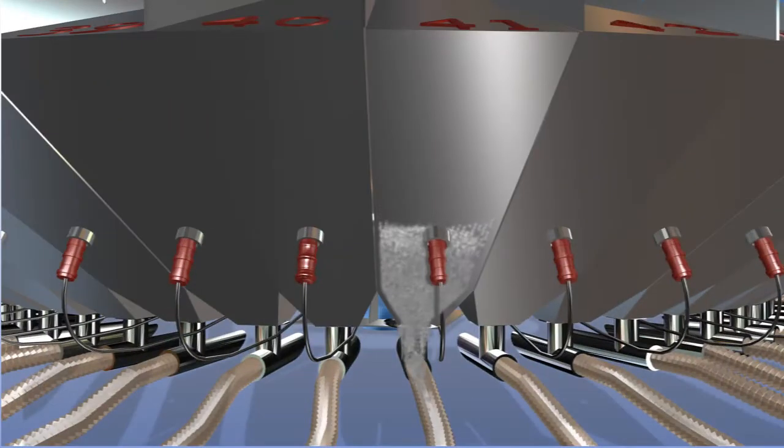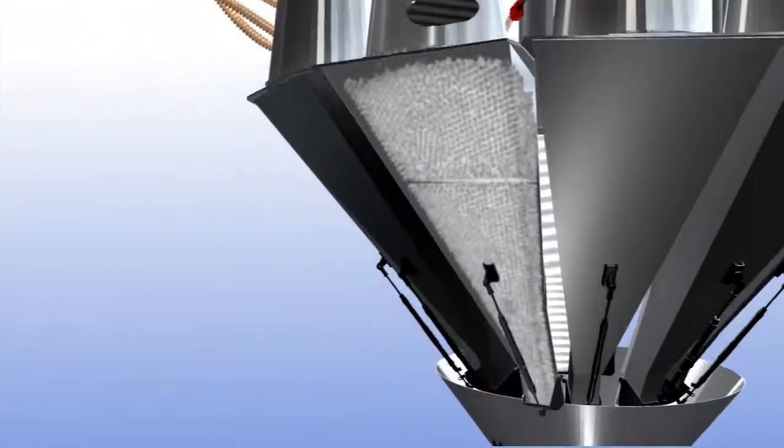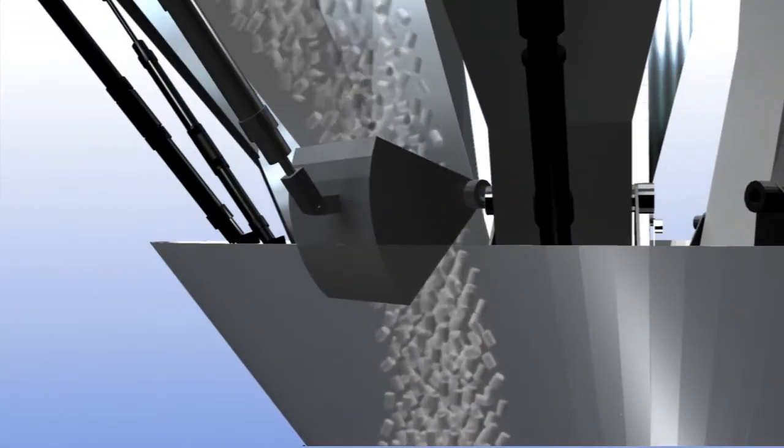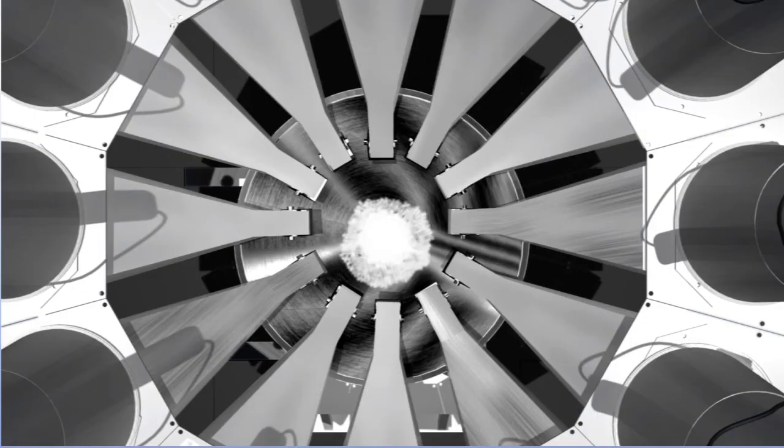When the level of raw material in the buffer falls below the sensor, PelletSave begins preparing an additional batch of material for that buffer's designated machine according to that machine's specific recipe.